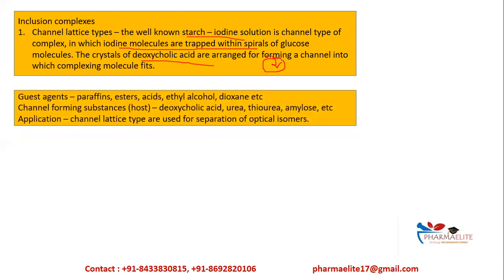There are two things in this: a host and a guest. Your host would be either deoxycholic acid, urea, thiourea, or amylose. This cavity is called the host. So your host entraps your guest and forms a channel clathrate type of complex. A typical example for this is starch-iodine. These inclusion complexes are also used for separation of optical isomers.